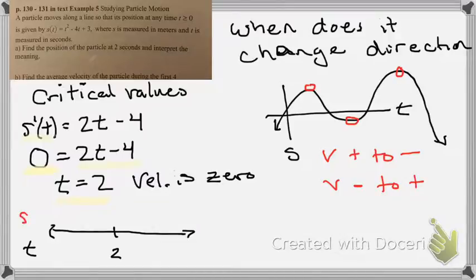And then I'm going to use a different color for s prime. If I plug in a value of 0 into my velocity function, I would get 2 times 0 minus 4. That's going to be negative. So I know the velocity is negative at a time of 0. And then if I plug in something like 10, because it's on the right side, I would get 2 times 10, which is 20 minus 4 is 16, and that's positive.